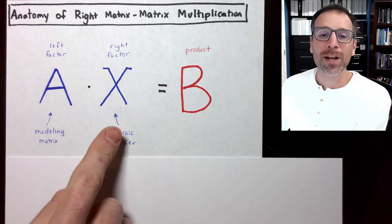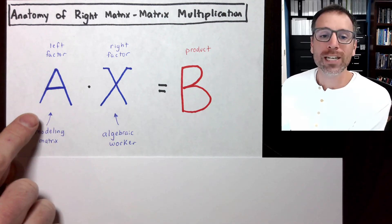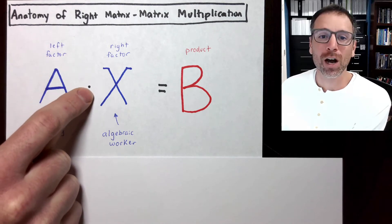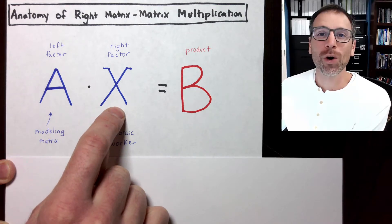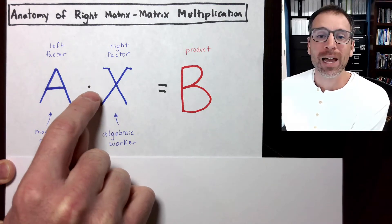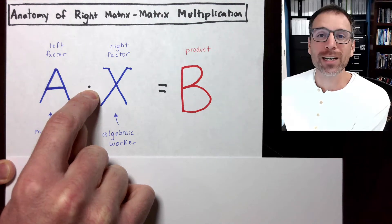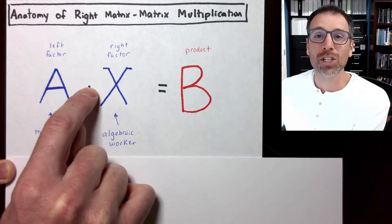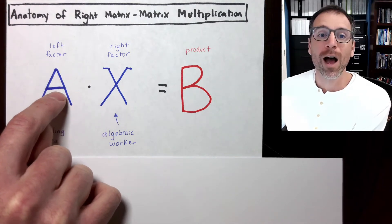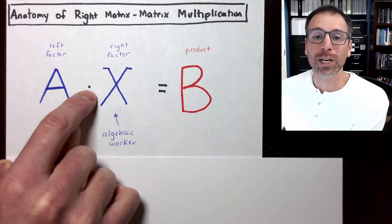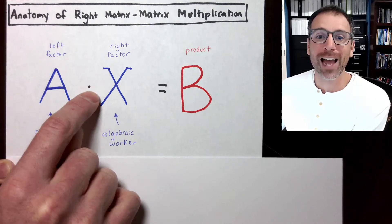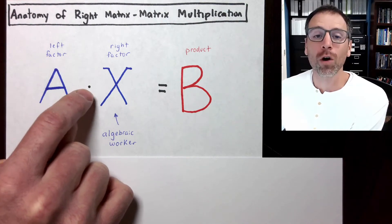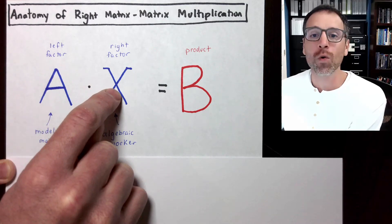When we're looking at that operation, we see the following symbols. We take a modeling matrix A and put it in the left factor of the product, then take an algebraic worker X and put it in the right factor. This dot symbol represents matrix-matrix multiplication — it's a product. Anytime we're doing a multiplication, we have two inputs: a left input and a right input, also called the left argument and right argument, or left factor and right factor.